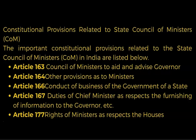The constitutional provisions related to the State Council of Ministers in India are as follows: Article 163 — Council of Ministers to aid and advise the Governor. Article 164 — other provisions as to ministers. Article 166 — conduct of business of the government of the state. Article 167 — duties of the Chief Minister as respects furnishing information to the Governor. Article 177 — rights of ministers as respects the houses.